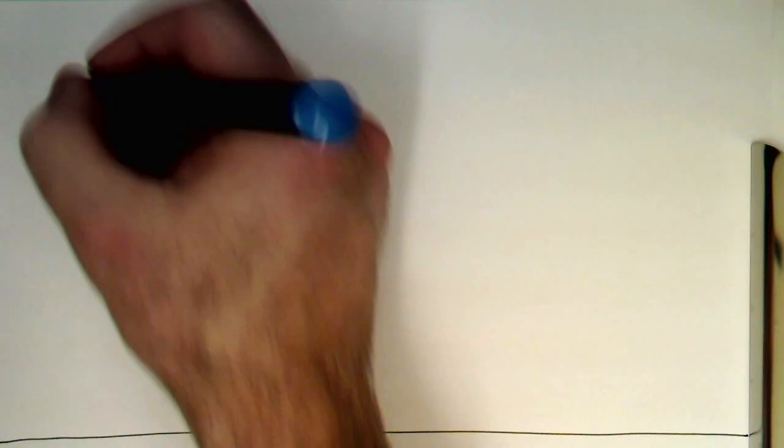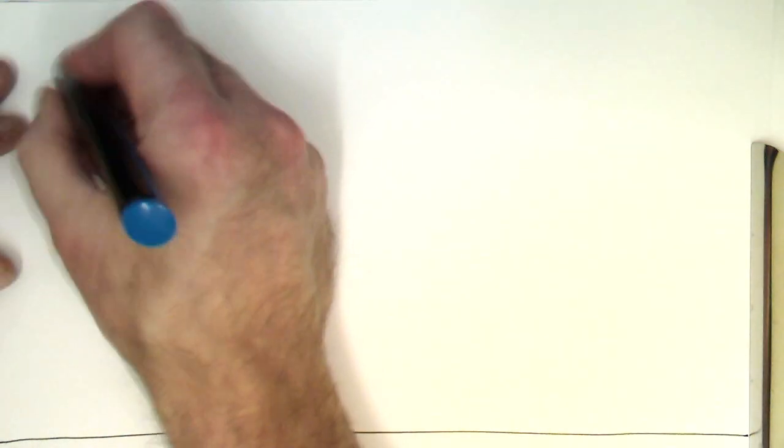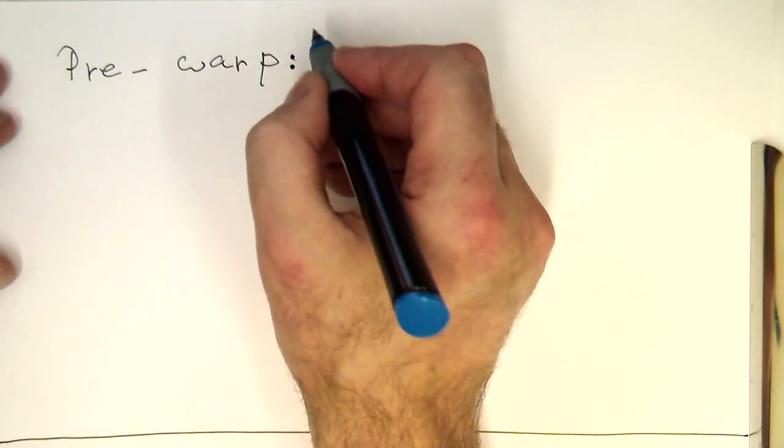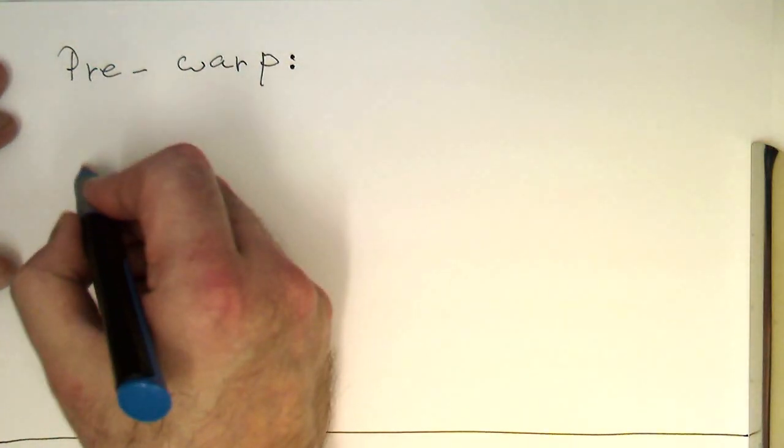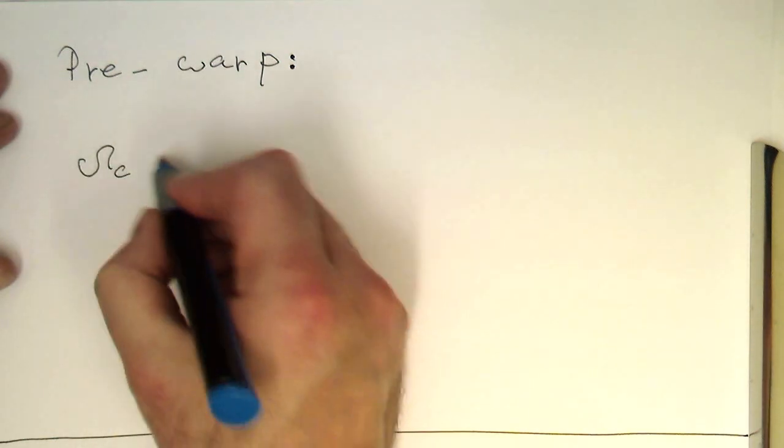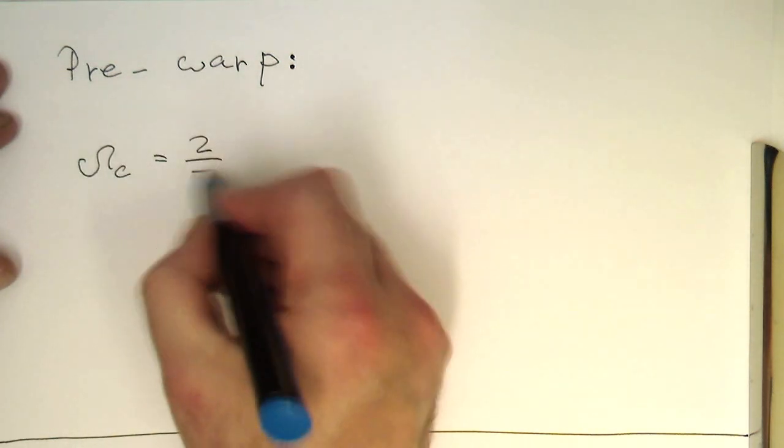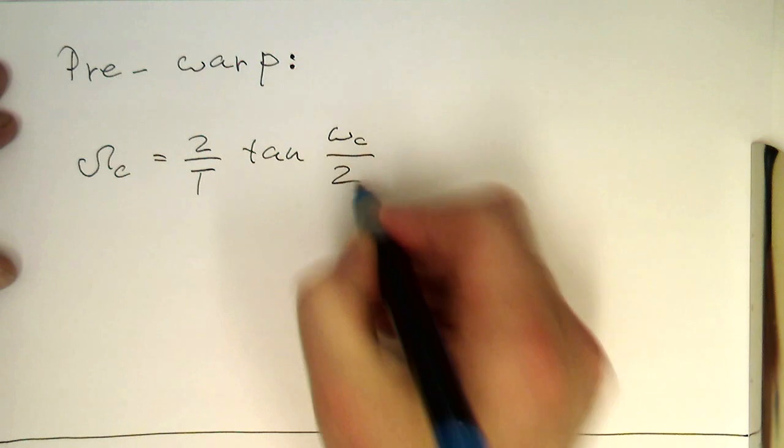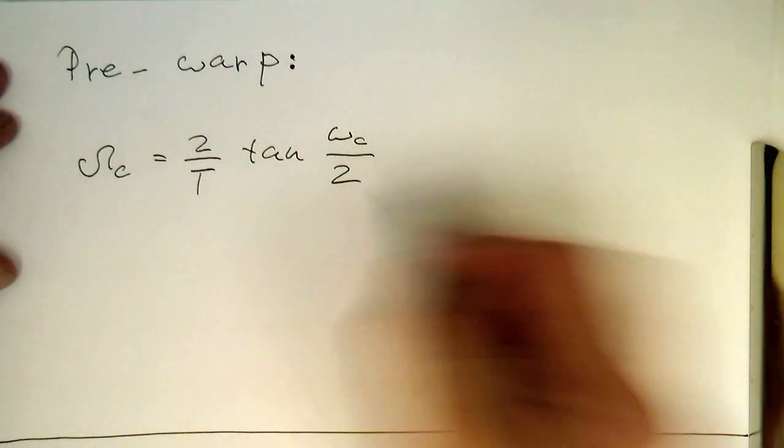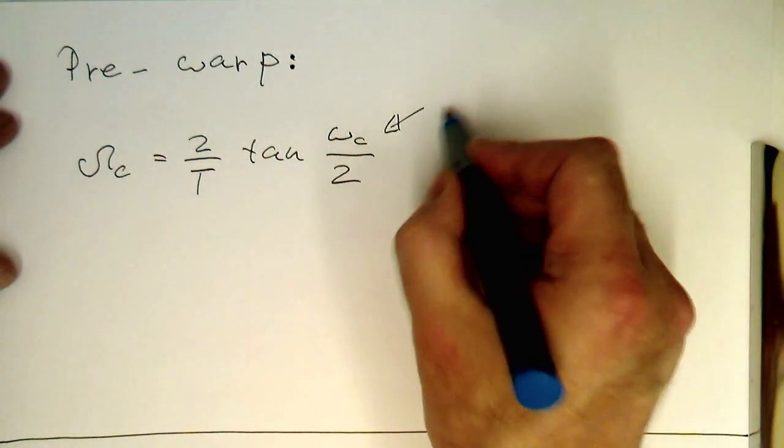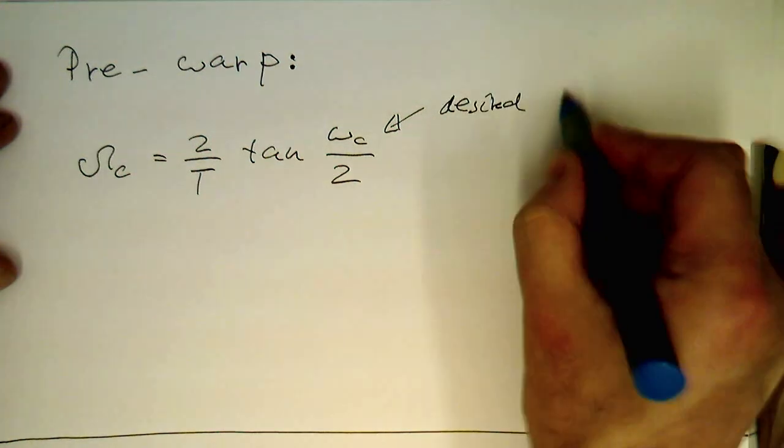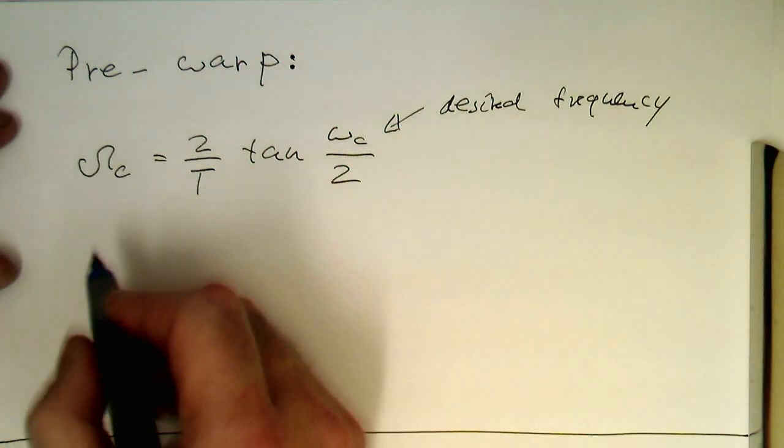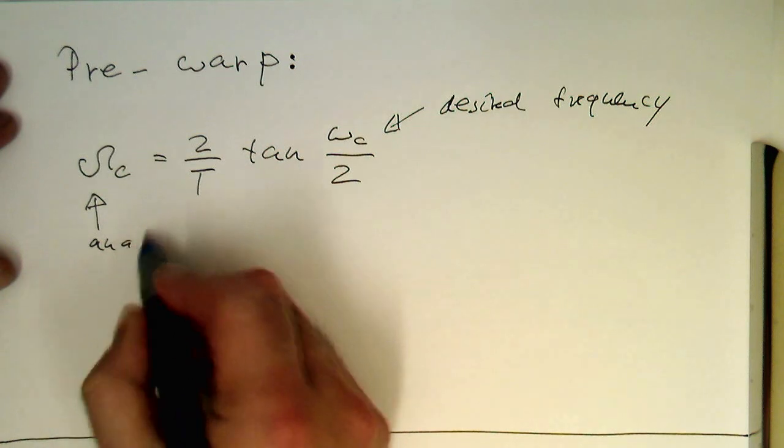This operation is called pre-warp, and we're documenting this on this extra sheet. So omega_c is 2/T tangent(omega_c/2). That's the desired frequency, and this is the analog frequency.